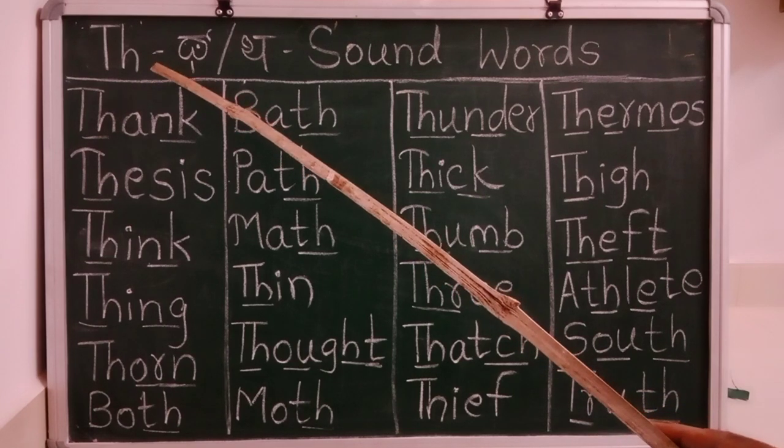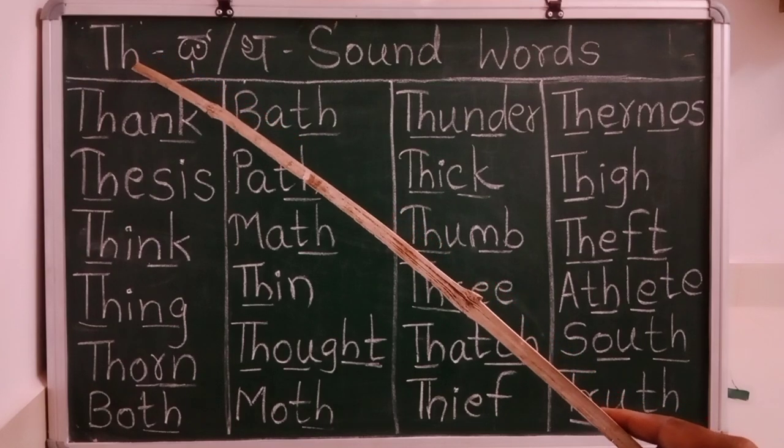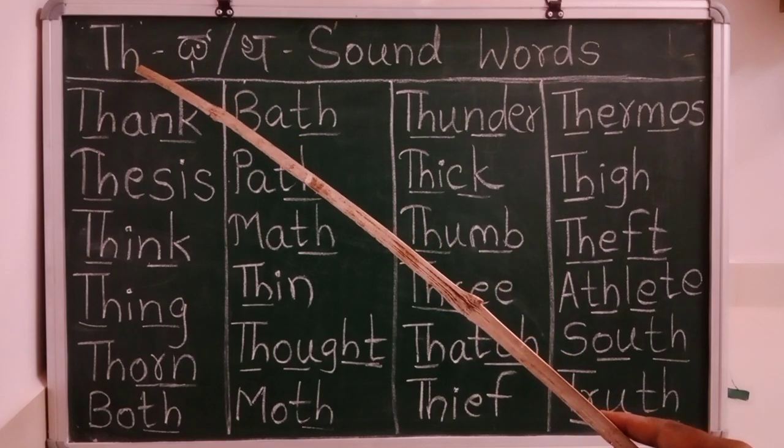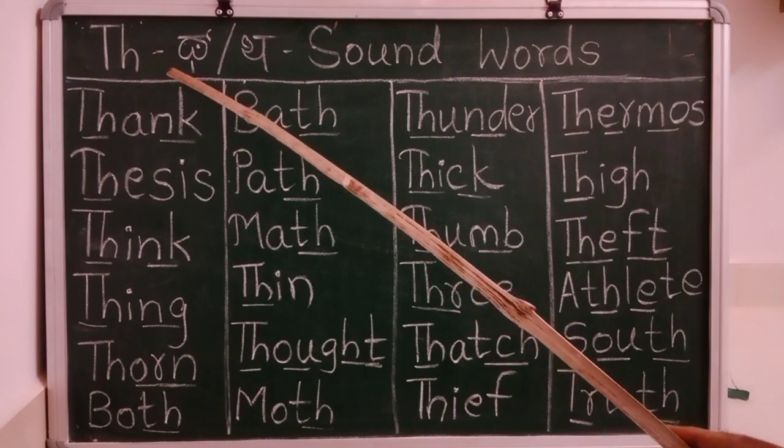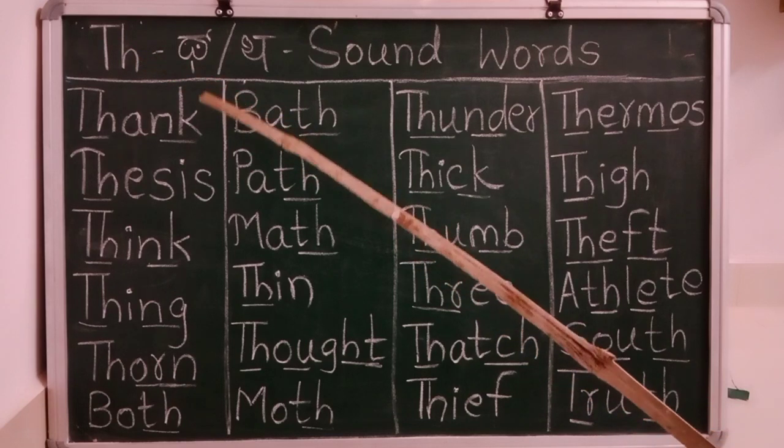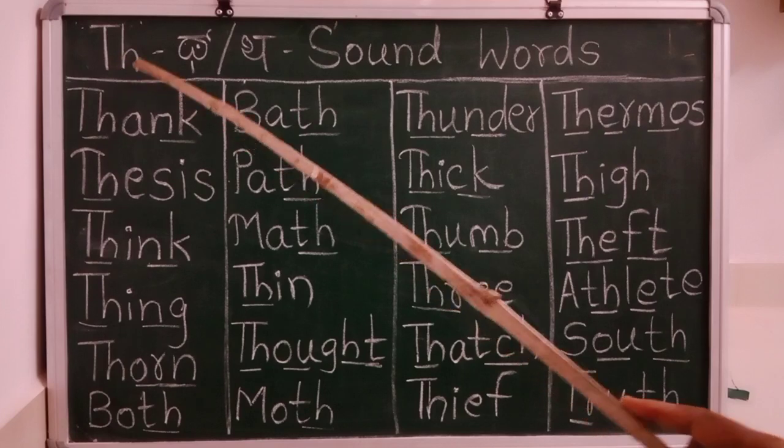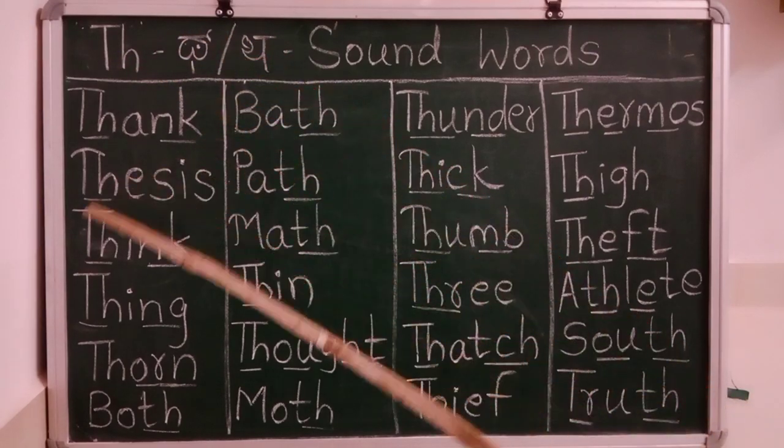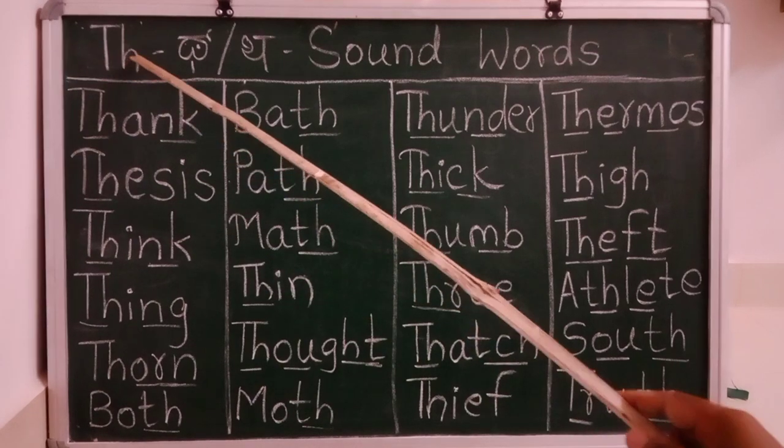But today I am going to introduce you the another sound of the spelling th. The another sound of the letter th, okay? And its sound is th and it is soft th. Th, th, th. So we learn to read the words with having th sound.